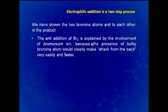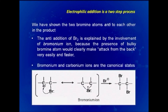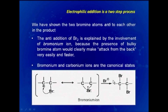Anti addition of bromine is explained by the involvement of the bromonium ion — a bridged species — because the bulky bromine atom on the bridge makes attack from the back easier and faster. Any other nucleophile such as Br minus faces steric hindrance from the bridging bromine, so it attacks from the side opposite to the bridging bromine. As a result, the incoming bromine is anti to the initially added bromine — hence anti addition product with the two bromines at 1,2 positions.